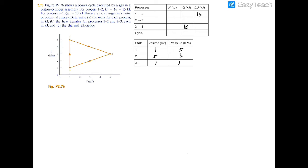Let's begin by finding all of our unknowns, starting with process one to two. Remember that the work is found using the formula of the integral from V1 to V2 of P dV, where V is volume and P is pressure. In this instance, you don't have a constant pressure because you have five kilopascals at state one and three kilopascals at state two. So you're going to have to find the area under the curve — in other words, find the formula of this line in Y equals MX plus B form, or slope-intercept form. The Y is going to be the pressure, the X is going to be the volume, M is the slope, and B is the Y-intercept.